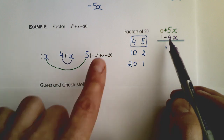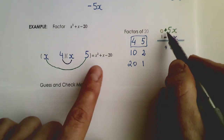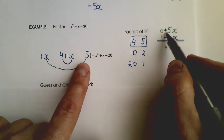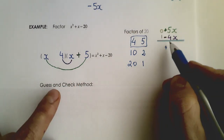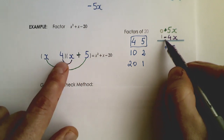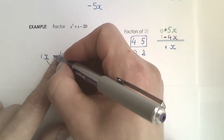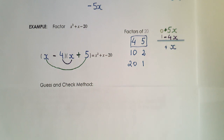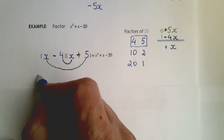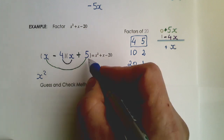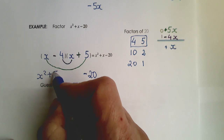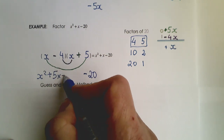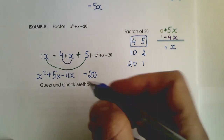Now I trace the signs back into the binomials. The outer loop had a positive sign, so I put a plus here. The inner loop had a negative sign, so I put a minus here. Now the expression is factored. Let's verify with FOIL: x times x is x squared; the last term is positive 5 times negative 4, which is negative 20; and the middle terms are plus 5x and minus 4x, combining to give x. It checks out.